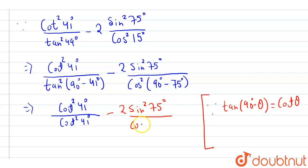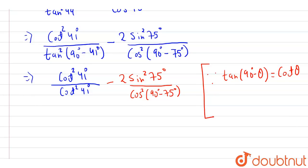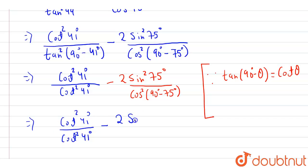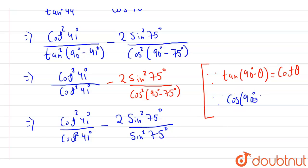Then minus 2 into sine squared 75 degrees upon cos squared (90 degrees minus 75 degrees). This denominator becomes sin squared 75 degrees, because we know that cos(90 degrees minus theta) equals sin theta. Therefore, cos squared (90 degrees minus theta) equals sin squared theta.